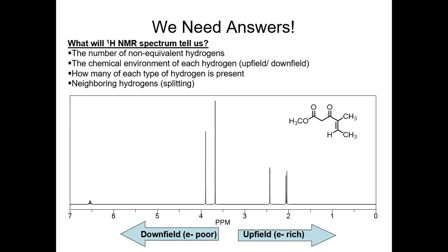Each set of non-equivalent protons has its own signal and its own splitting pattern. The NMR spectrum tells us how many non-equivalent protons are present, where they are — electron-withdrawing groups shift signals downfield (electron poor), electron-donating groups shift upfield (electron rich). This is a very powerful analytical tool.